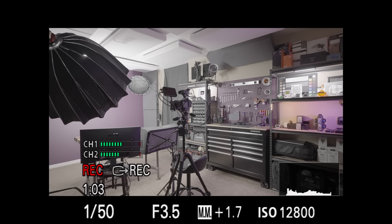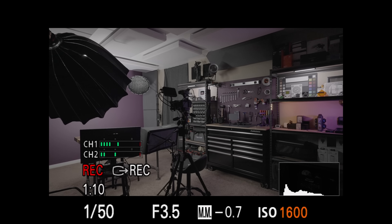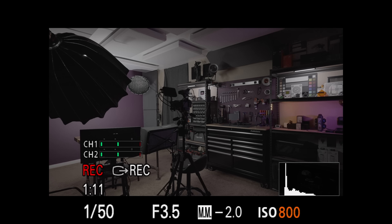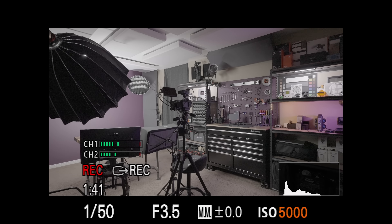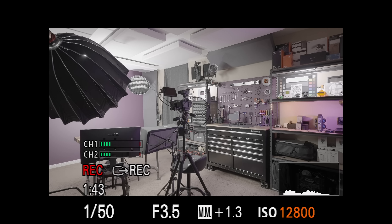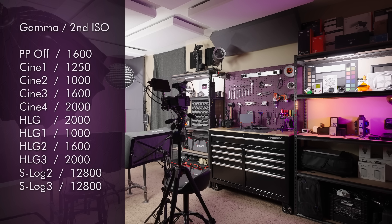Here's a handy trick to remember where the second native ISO falls for each profile: it's 20 times the base ISO. For S-Log 2 and 3 with base ISO 640, multiply by 20 to get 12,800. For profiles with a base ISO of 64, there's no ISO 1280, so it rounds to ISO 1250. Just multiply by 20.